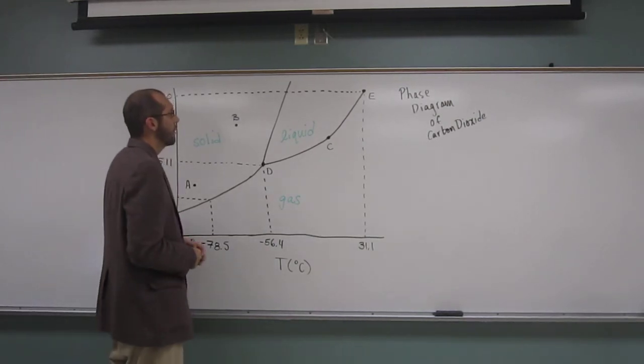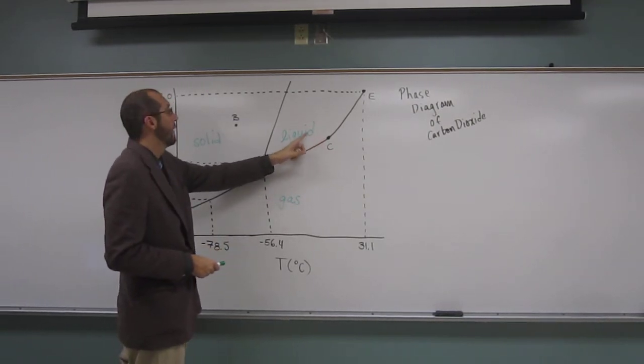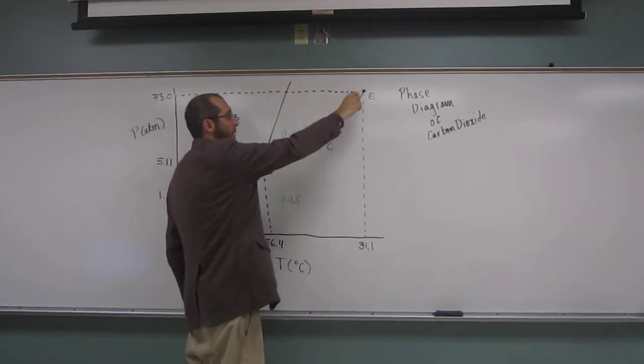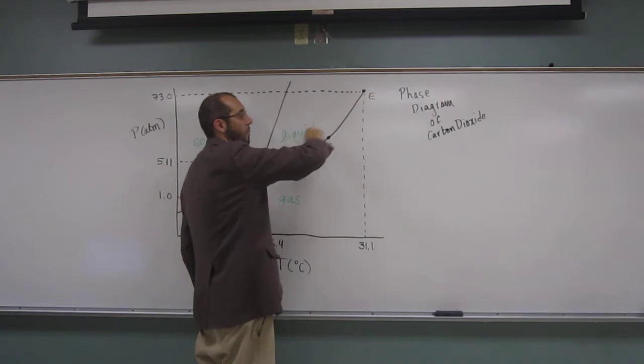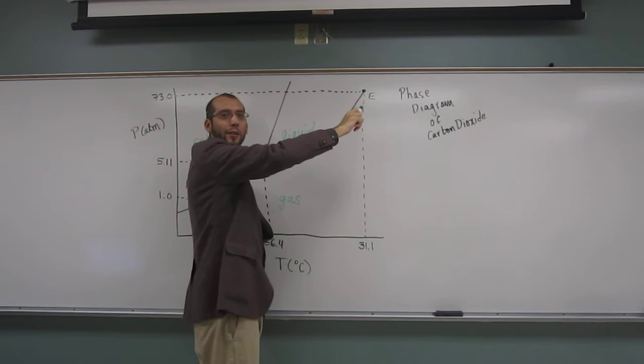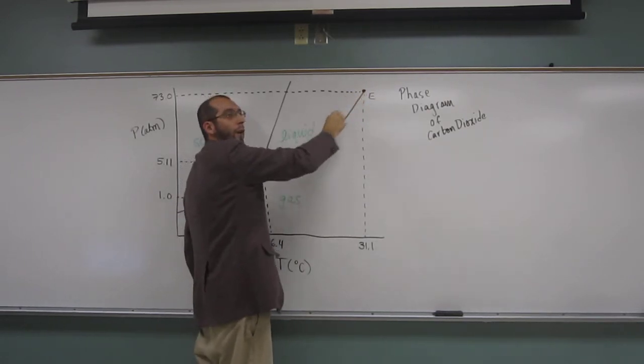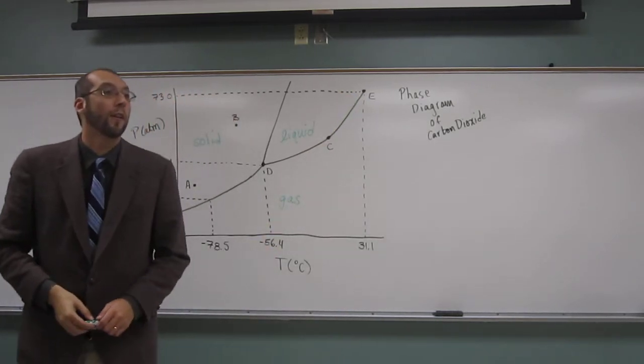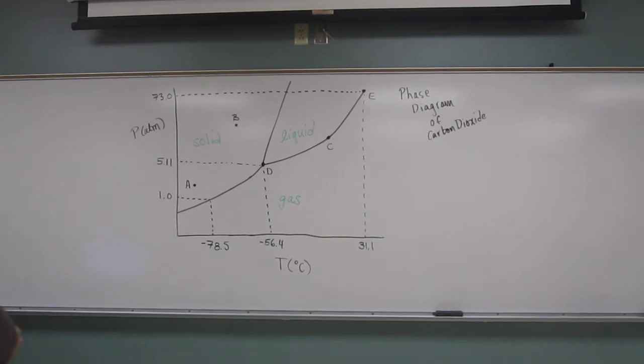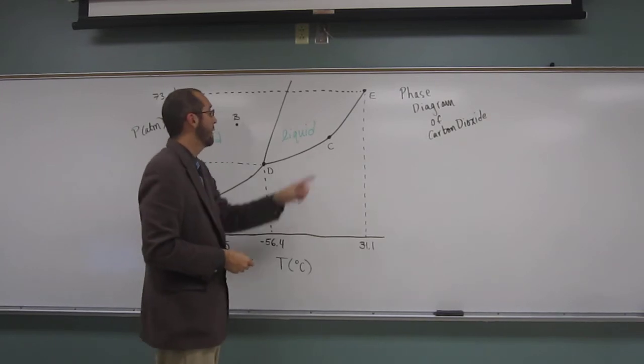So the first question said what phases are present at point C? So notice point C is on that phase change boundary line. This is actually the line you get - does anybody know what equation will give you this line here? Is that equation that we learned in this chapter? The Clausius-Clapeyron equation. If you do that Clausius-Clapeyron it will give you that phase change line there. But what phases are present at point C? Liquid and gas, since it's on the line.